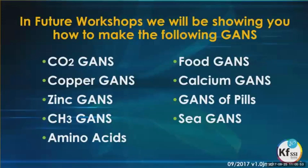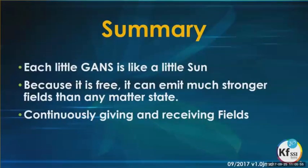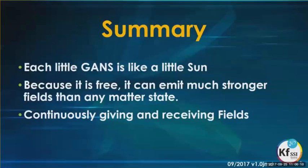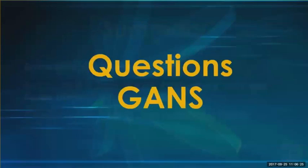The summary of what GANS is: view them as tiny little suns — a tiny round magnet that's constantly radiating. Because it's free, it's a tiny little entity all on its own, emitting a much stronger field than when it was attached to the matter state, and continuously giving and receiving fields. That was a short section, but important to establish the very basics of what GANS is.